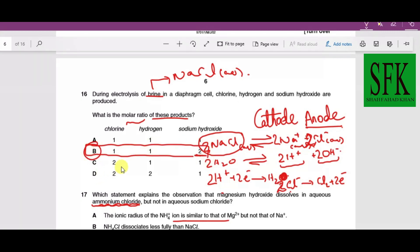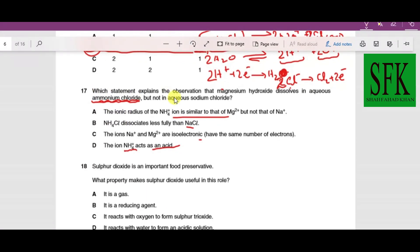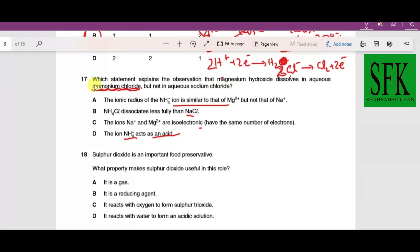Which statement explains why magnesium hydroxide dissolves in aqueous ammonium chloride but not in aqueous sodium chloride? This is directly from the syllabus—when alkalis are heated with ammonium salts they give off ammonia gas. Magnesium hydroxide is a base that will react with ammonium ions to give off ammonia gas. The ammonium ions act as acids here, so the best option is the first one.